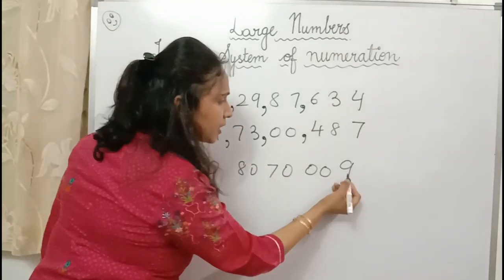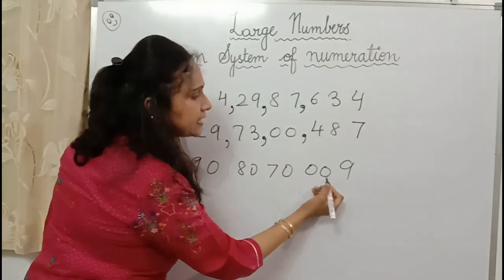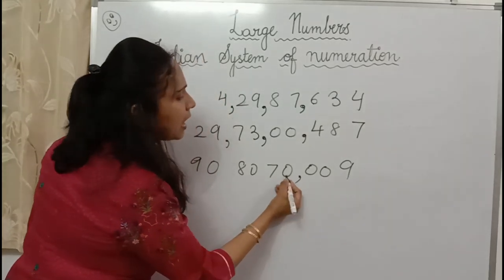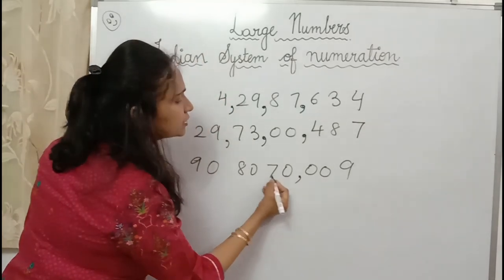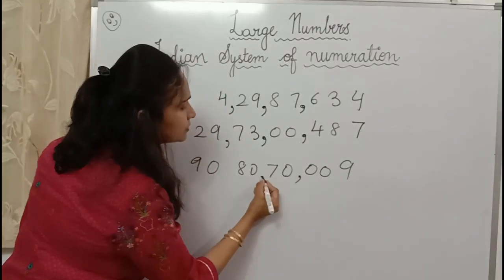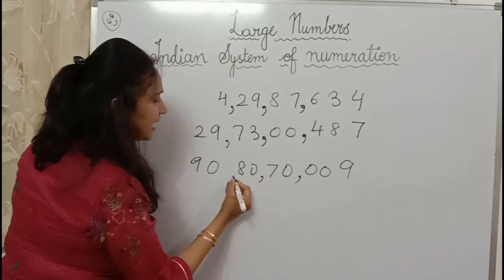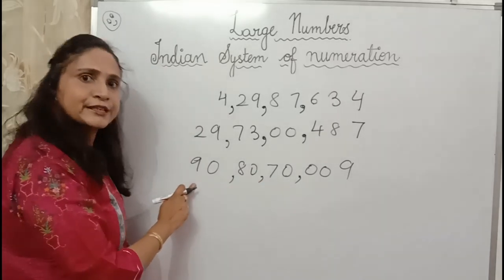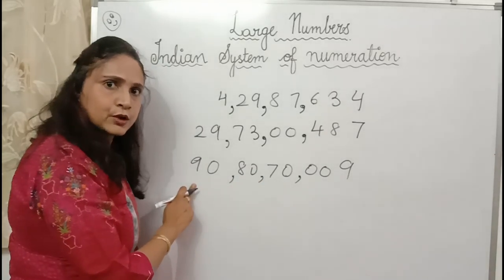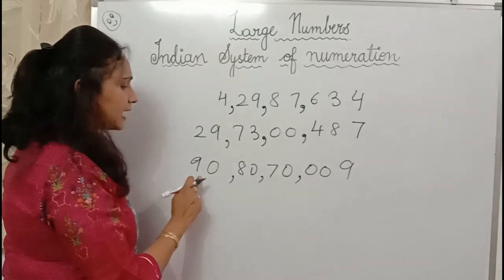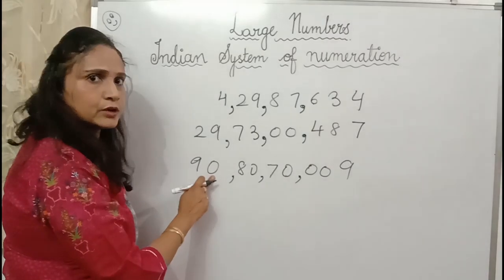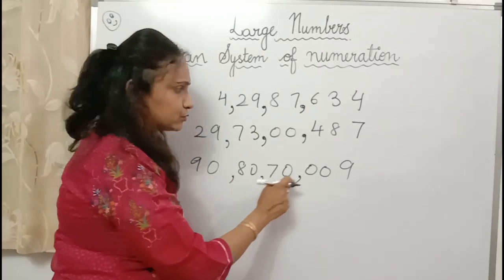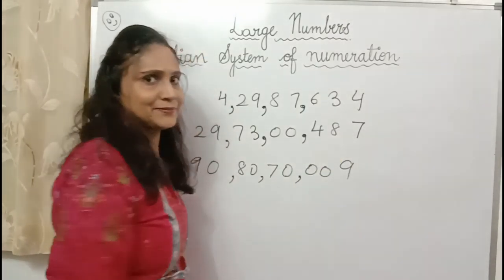Again: ones, tens, hundreds — comma. Thousand, ten thousand — comma. Lakh, ten lakh — comma. Crore, ten crore. So it is ninety crore, eighty lakh, seventy thousand nine.